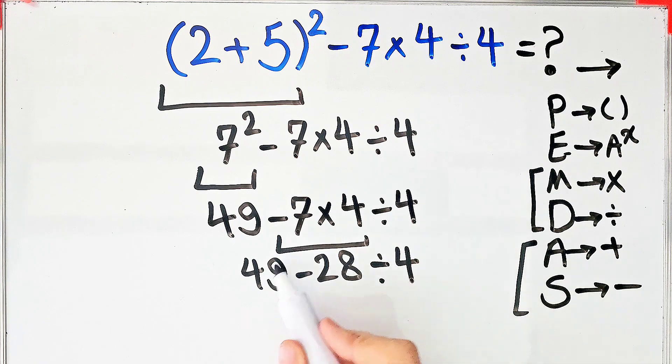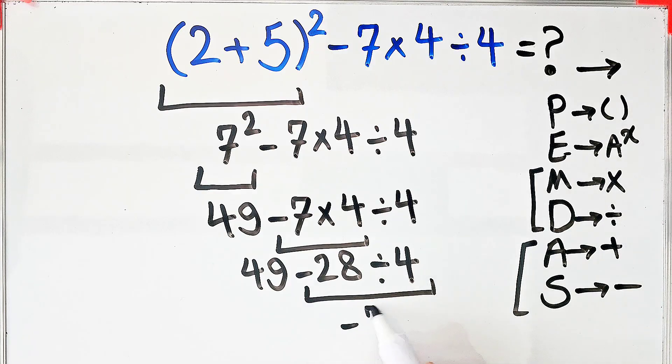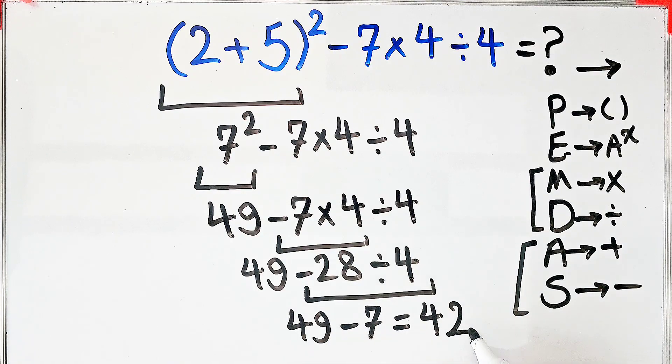Now we have subtraction and division. First we do this division because division has higher priority than subtraction. 28÷4 equals 7. And 49 - 7 equals 42. The final answer to this question equals 42.